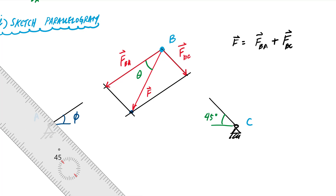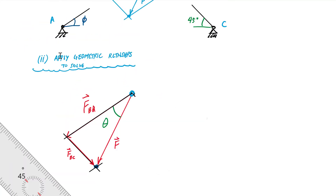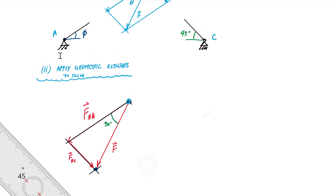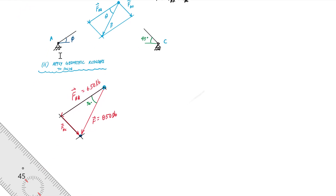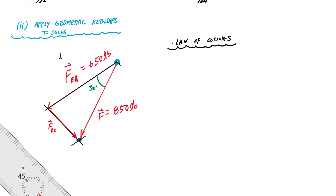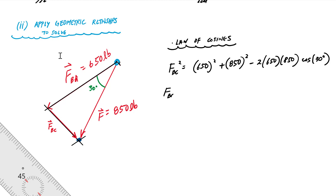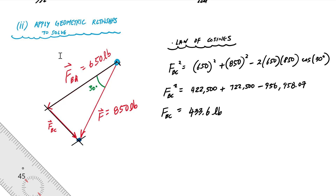I pick the triangle on the left. I know theta is 30 degrees, F_BA is 650 pounds, and the resultant is 850 pounds. From the law of cosines I can determine the magnitude of F_BC. That calculation gives F_BC equals approximately 433.6 pounds.